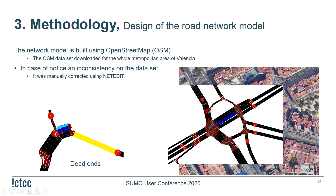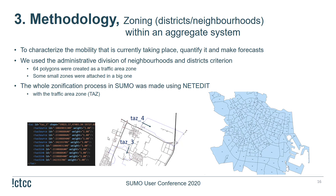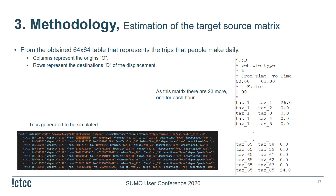For the zoning into districts or neighborhoods, aggregate systems are used to characterize mobility, quantify it, and make forecasts. We use the administrative division of neighborhoods, resulting in 64 polygons created as traffic area zones. The entire zonification was processed using NetEdit with the traffic area zone option.